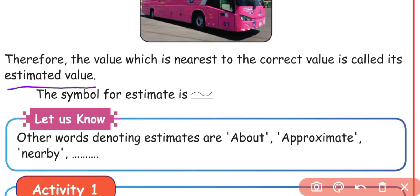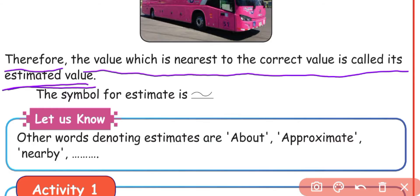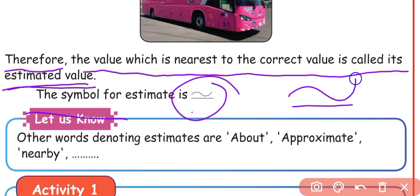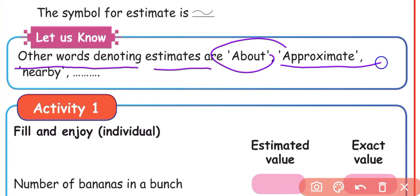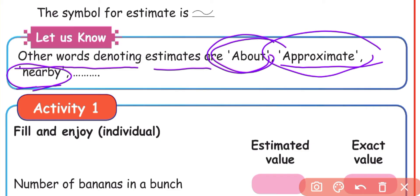Therefore, the value which is nearest to the correct value is called the estimated value. The symbol for estimation is the wavy equals sign (≈). Other words denoting estimates are: about, approximate, nearby. These words are used when we estimate a value.